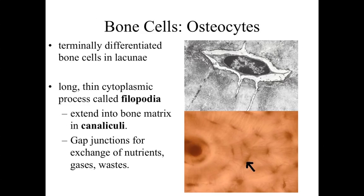Once osteoblasts become terminally differentiated, they become essentially trapped within the bone matrix itself, found in a region called the lacuna — similar to what we see with chondrocytes. An osteocyte is thus a bone cell trapped within the bone matrix. Since bone doesn't have the ability to allow diffusion like cartilage, osteocytes send out very long, thin filipodia — cytoplasmic processes that extend through little canaliculi, little canals within the bone matrix — connecting up with other bone cells. Through gap junctions, they exchange oxygen, nutrients, and waste materials, so that cells trapped within the bone matrix are not isolated from the circulatory system.